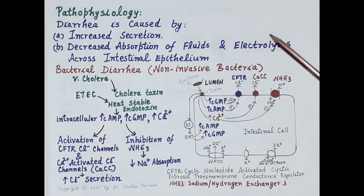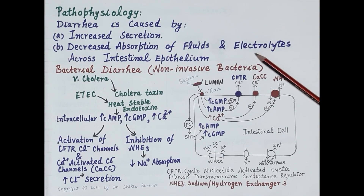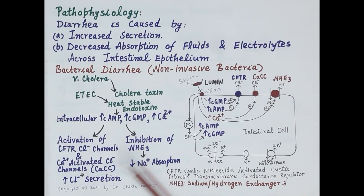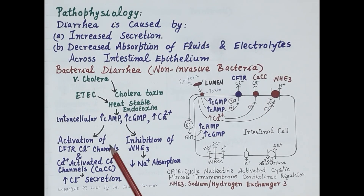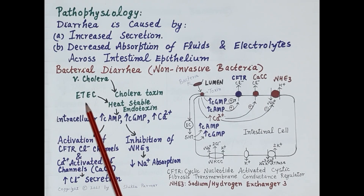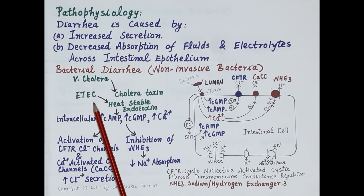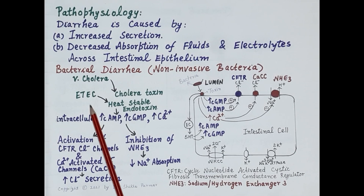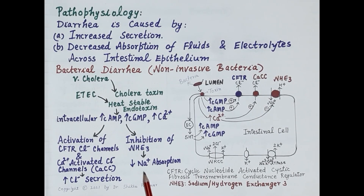Now let's discuss the pathophysiology of acute diarrhea caused by bacterial and viral infections. Diarrhea is caused by increased secretion and/or decreased absorption of fluid and electrolytes across the intestinal epithelium. To understand how non-invasive bacteria produce diarrhea, we use examples of enterotoxigenic E. coli (ETEC) and Vibrio cholerae. Both are non-invasive bacteria — they do not invade the mucosal epithelial cells — but they produce toxins that increase secretion and reduce absorption of water and electrolytes, thus producing diarrhea.